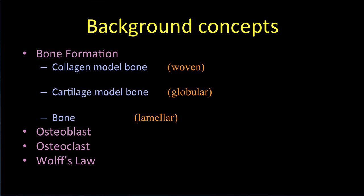There are fundamental concepts relevant to the discussion of growth and development of the skeleton. The first is to understand bone formation. Bone cannot develop in a vacuum, but rather requires a template on which the bone is deposited. In man, the templates are collagen, leading to a specific type of bone that has a woven or membranous characteristic, and cartilage, leading to enchondral bone formation.